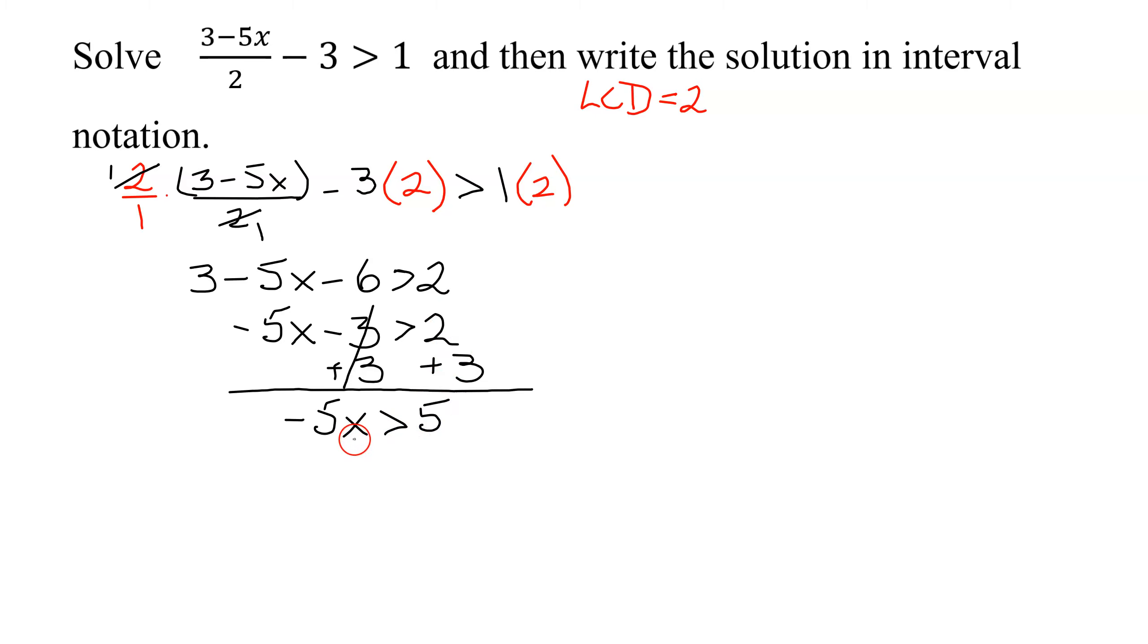So now I get negative 5x is greater than 2 plus 3 is 5. And now to isolate the x, I have to divide both sides by negative 5. Be careful, I'm dividing by a negative number. And what does dividing by a negative number do to the inequality symbol? It reverses it. So I'm going to get negative 5x over negative 5 is less than 5 divided by negative 5. Dividing by that negative reverse my greater than to a less than.